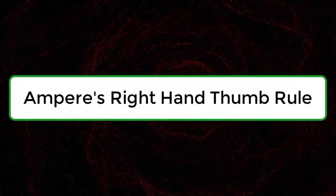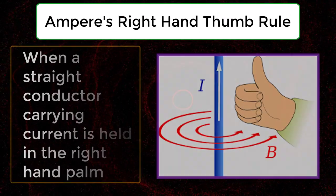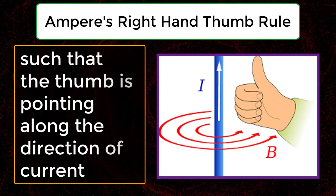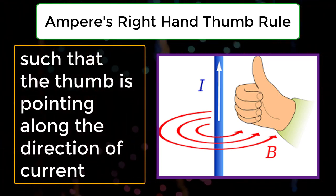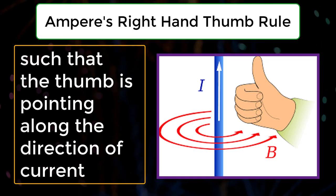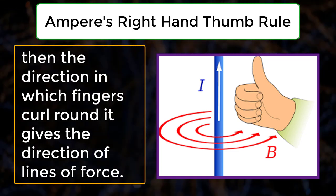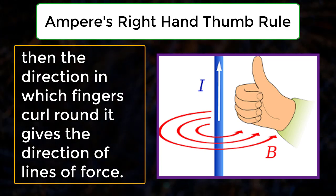Ampere's Right Hand Thumb Rule: When a straight conductor carrying current is held in the right hand palm such that the thumb is pointing along the direction of current, then the direction in which fingers curl round it gives the direction of lines of force.